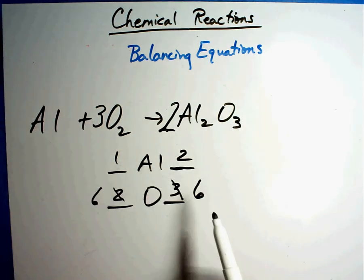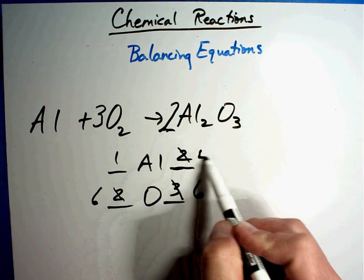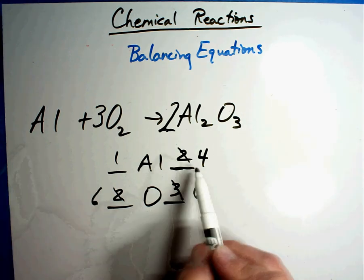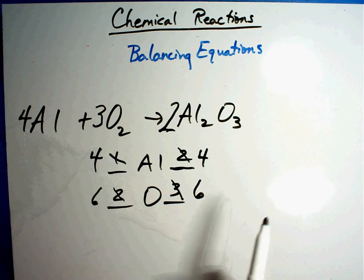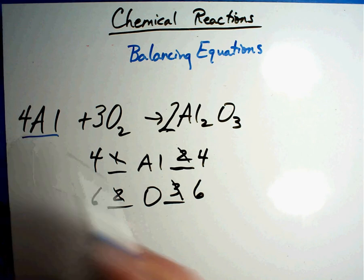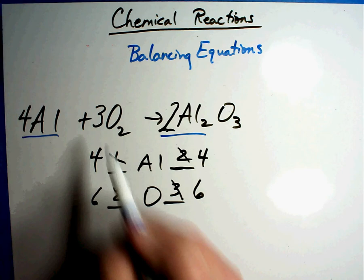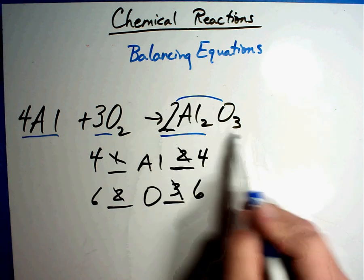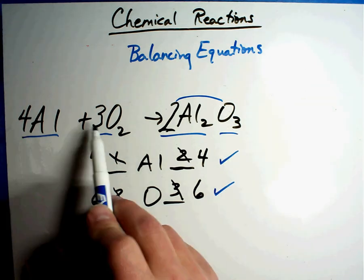Three and two don't easily go into each other, but they do go into six. Two times three is six, and three times two is six. When I did that, I messed up Al — putting a two in front of Al₂O₃ gave me four Al's. So putting a four in front of Al on the left fixes it. Four Al's and four Al's — two times two. Six O's and six O's — two times three. Sometimes there's a number in every single place.